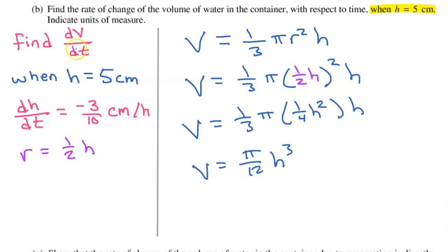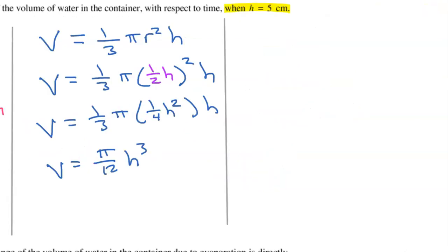But we need dV/dt. So let's take the derivative of both sides. If you take the derivative of the left side with respect to t, that is simply dV/dt. I'm going to ignore the constant and just put down pi over 12. And then the derivative of h to the third power will be 3h squared. But because this is not a t, I need to do the chain rule and multiply by the derivative of the inner function, which is dh/dt.